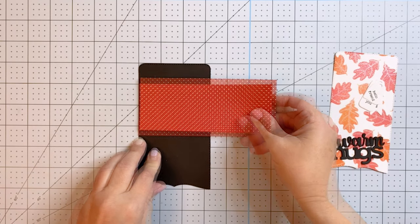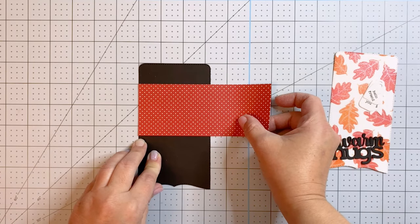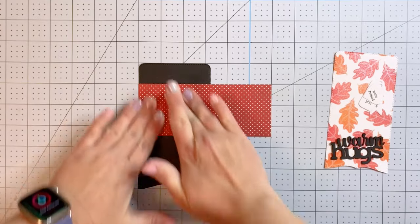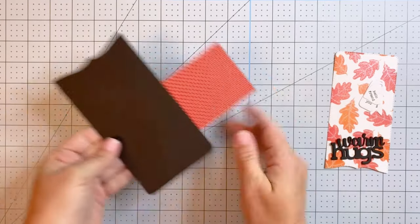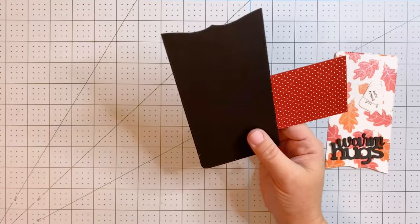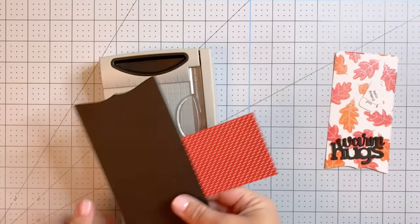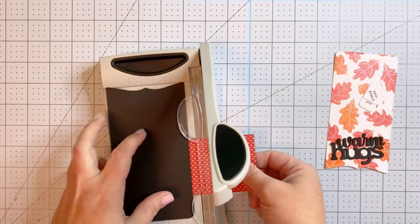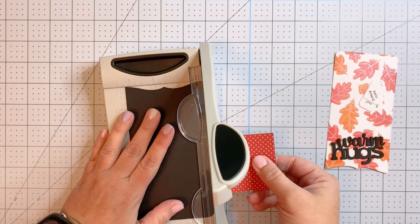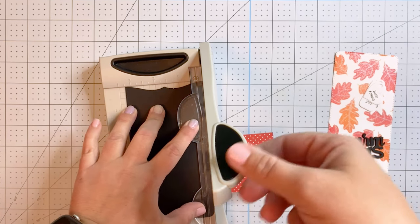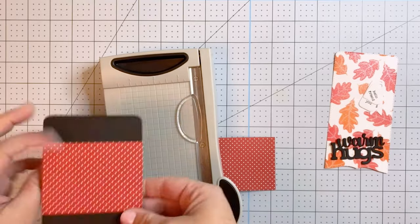This is a great paper pad because of the neutral patterns it has. It has small dots, larger dots, and stripes as well in the primary colors. So you can use this for backgrounds, you can use it to add a little bit of interest and detail to your cards. Really nice paper pad.